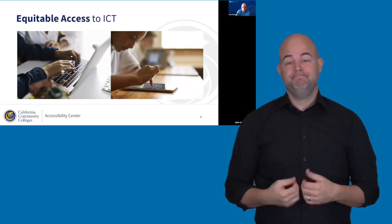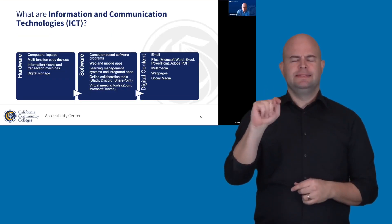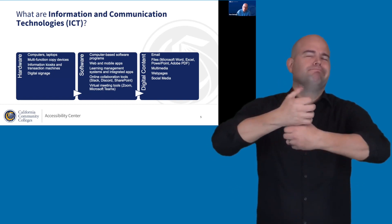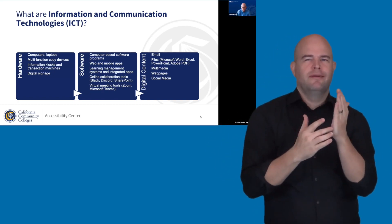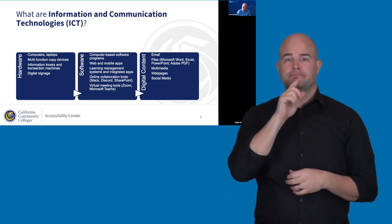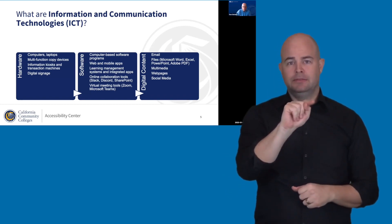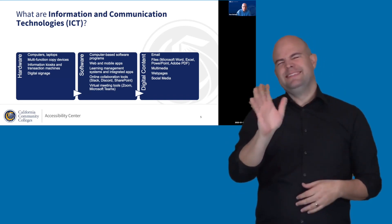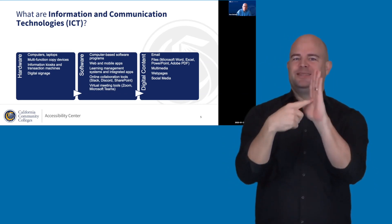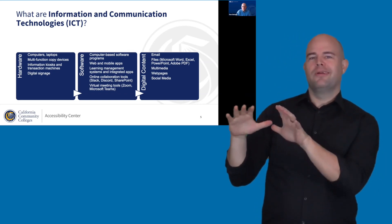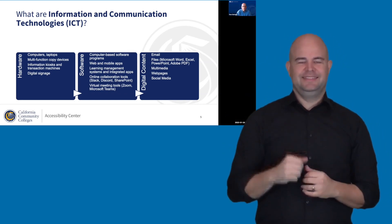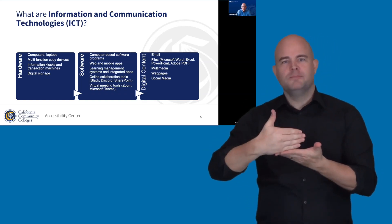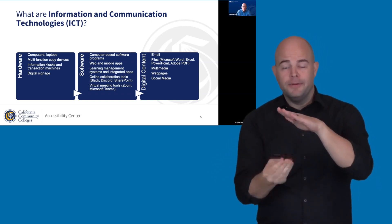On equitable access to ICT — we use ICT as an acronym for information and communication technologies. It's basically a subset of information technology. I've listed three categories of ICT. The first is hardware, which includes things such as computers and laptops, multifunction copiers, printers, and scanners.